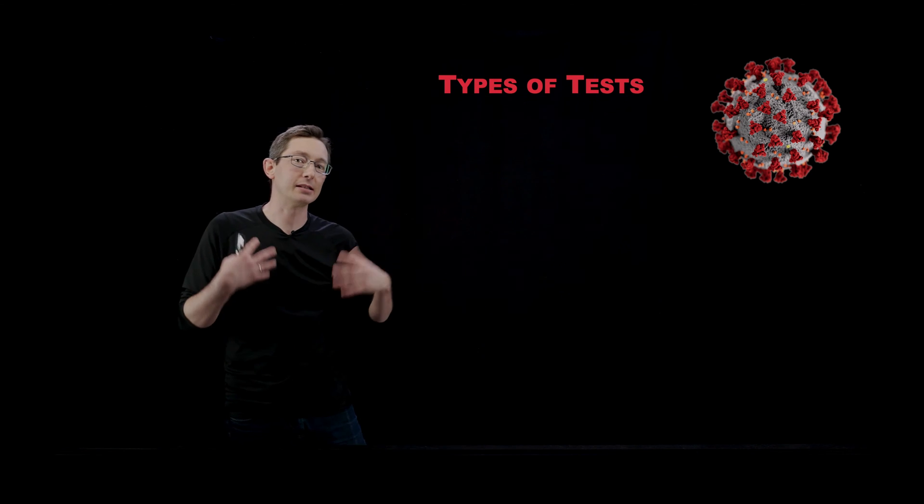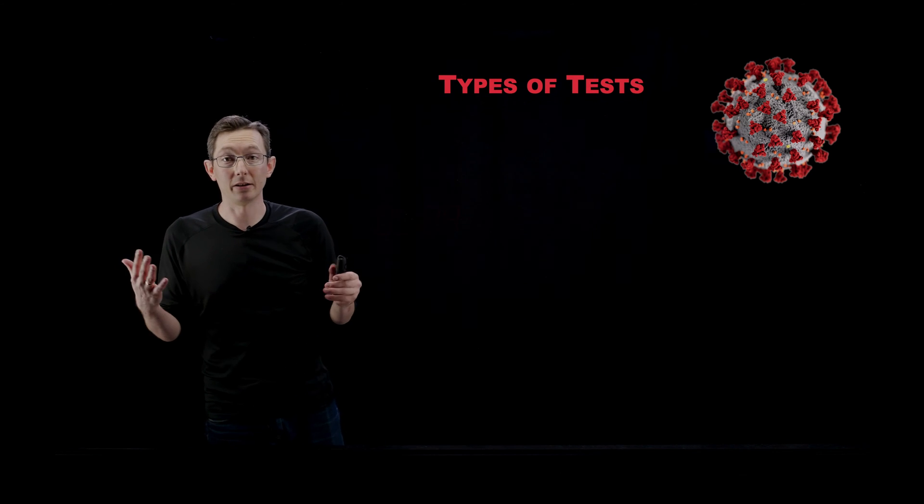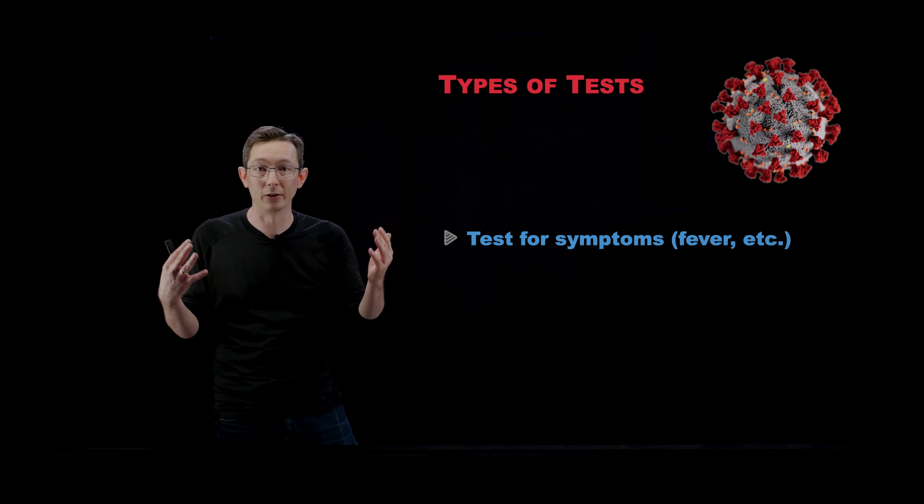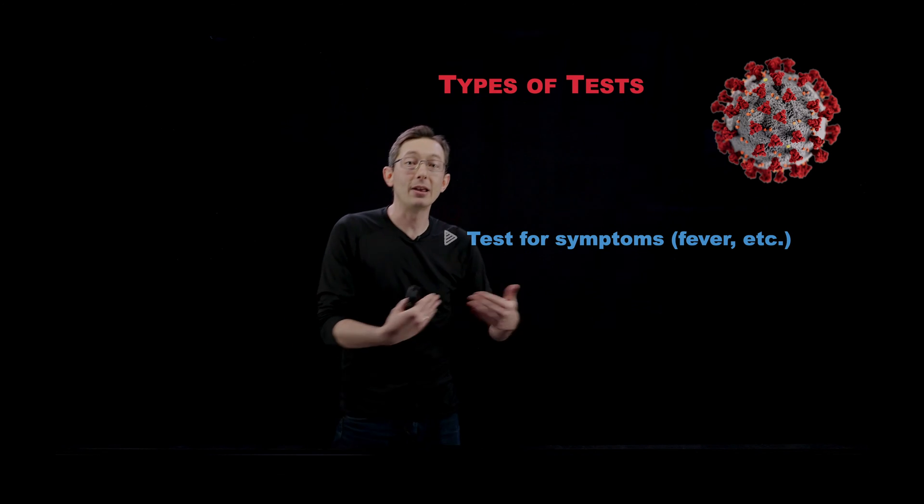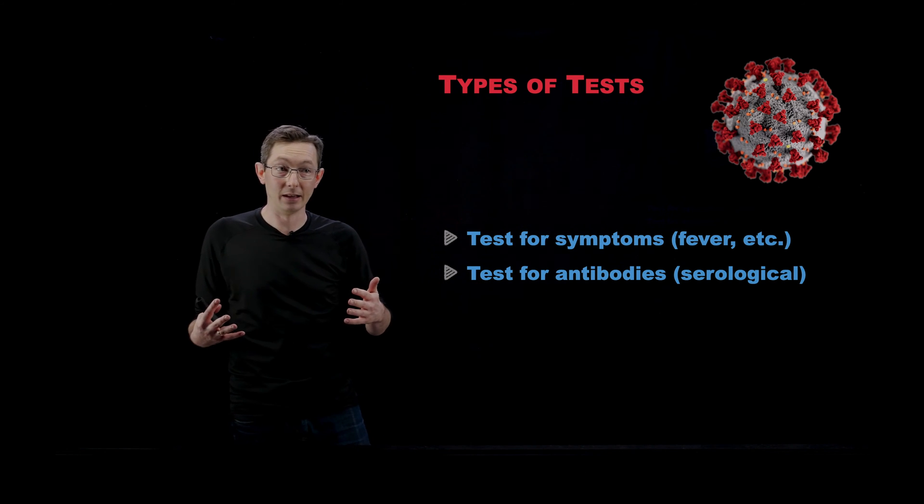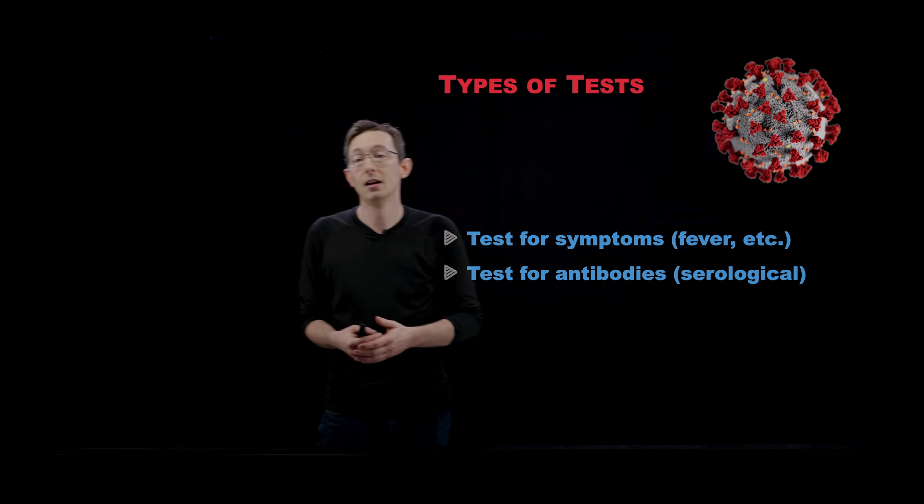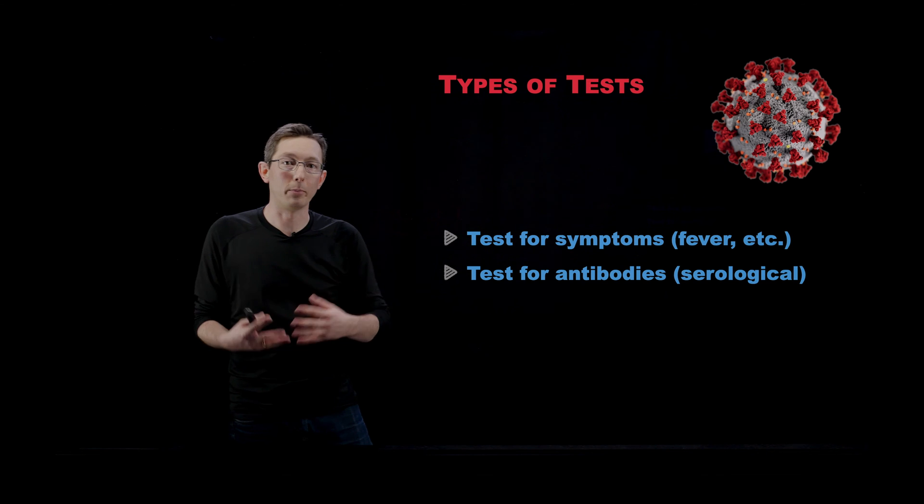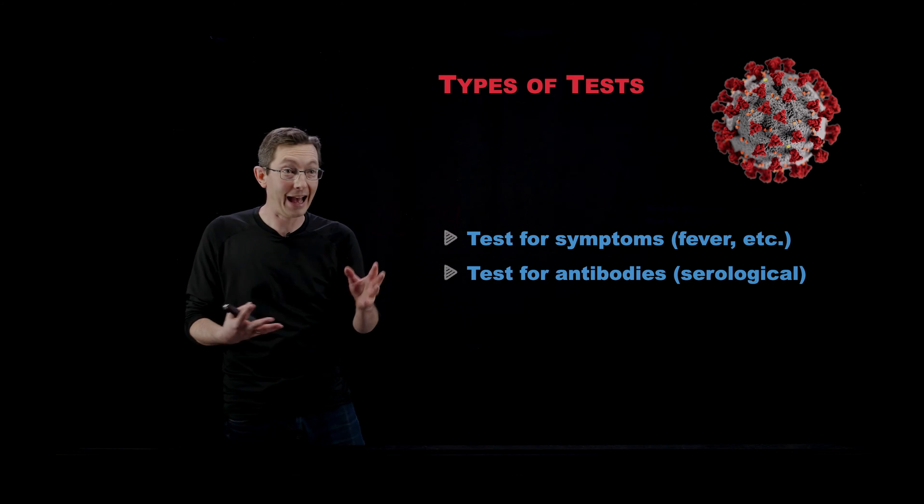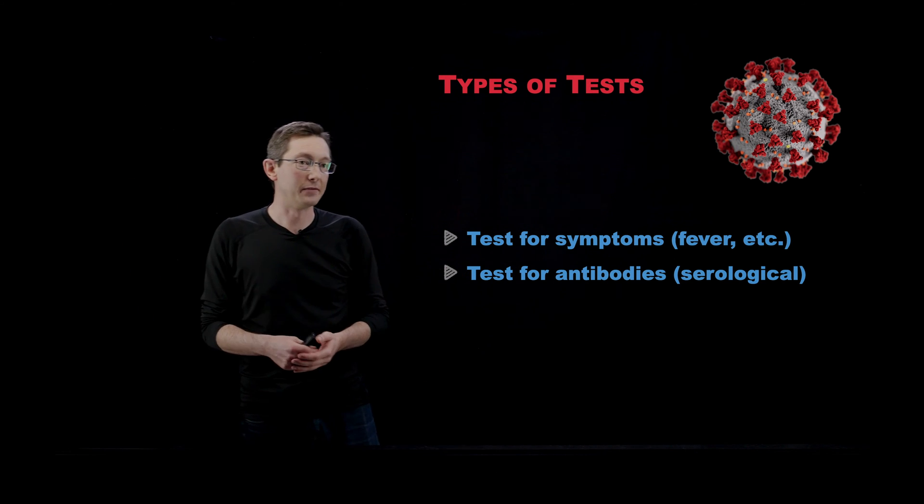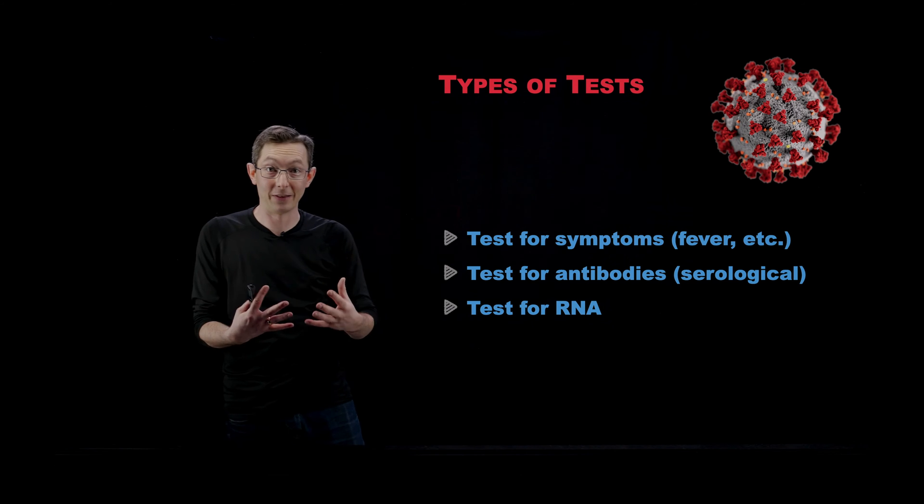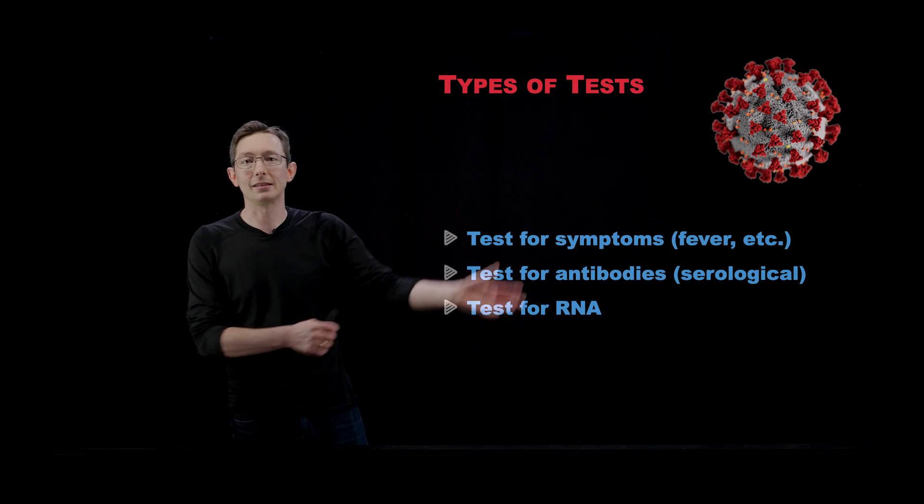What are some of the types of measurements and tests that we can take in this system? There's a lot at our disposal. One thing you can do is test for symptoms - does someone have a fever, do they have the symptoms of coronavirus? Another type of test: you can test for antibodies in the patient. This is called serological testing. For example, what proportion of citizens in Manhattan have antibodies, meaning that they have already had or currently have this virus? You can also test directly for the RNA from the virus to see if that is currently in the patient. There's all kinds of tests that you can do.